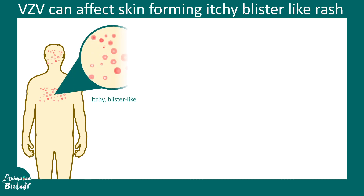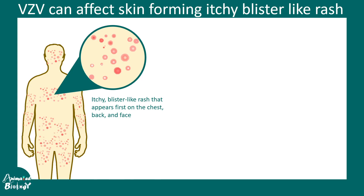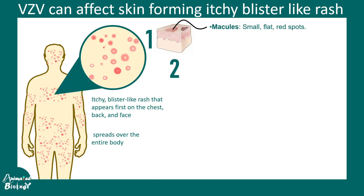This infection always starts as an itchy, blister-like rash that appears first on the chest and then the face, eventually spreading to all the extremities of the body. There are different stages of this kind of rash — these are maculopapular rashes.